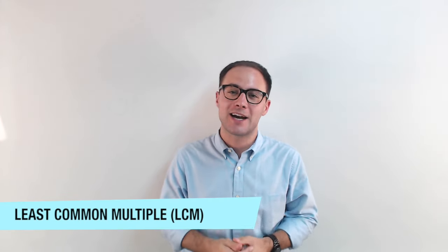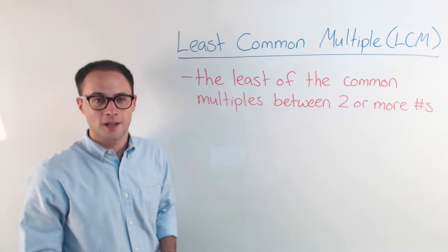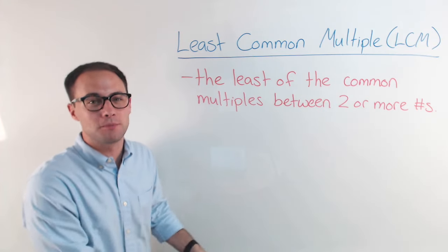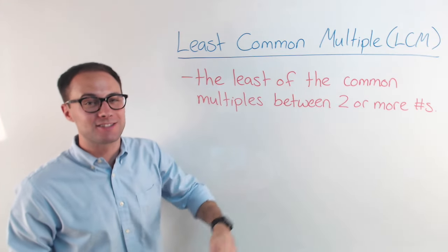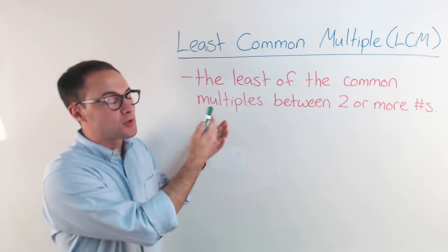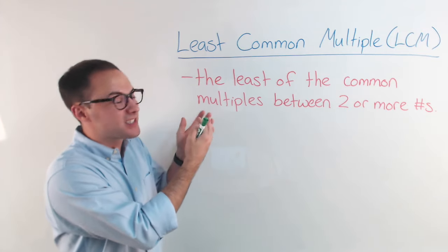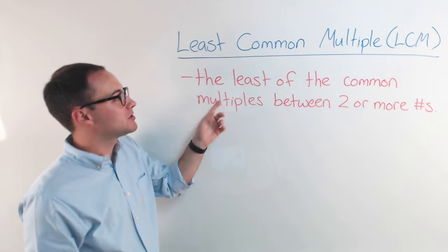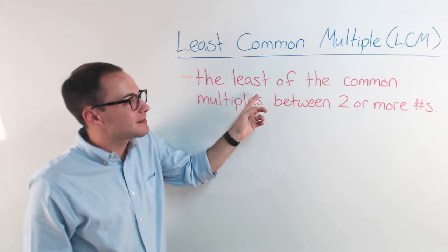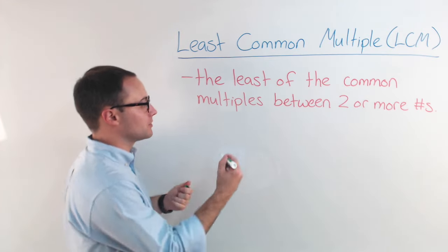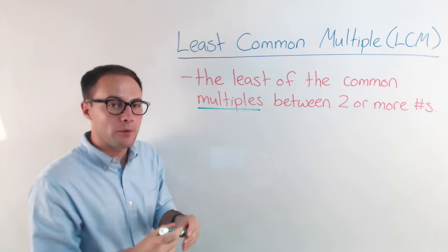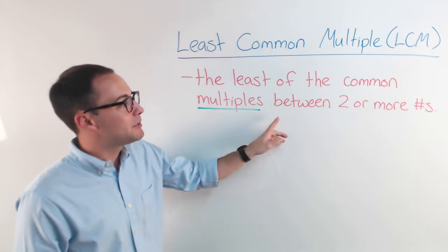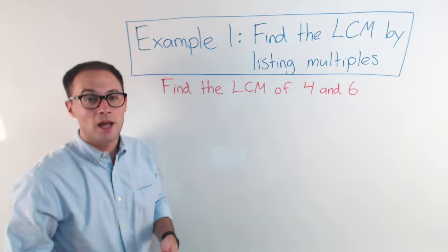Today we're talking about the least common multiple, or better known as the LCM. Just like greatest common factor, the name kind of gives it away — the LCM is just the least of the common multiples. You've got to remember that we're talking about multiples here, not factors, between two or more numbers.